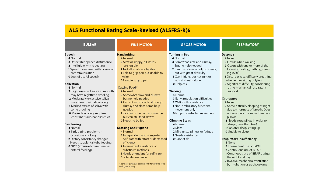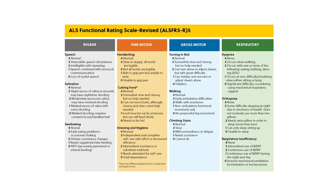The first domain is bulbar, which assesses speech, salivation, and swallowing. The second domain is fine motor, which assesses handwriting, ability to cut food with or without a gastrostomy, and dressing and hygiene. The third domain is gross motor, which assesses the ability to turn in bed, walk, and climb stairs. And the fourth and last domain is respiratory, which assesses dyspnea, orthopnea, and respiratory insufficiency.